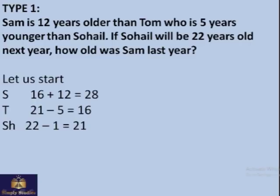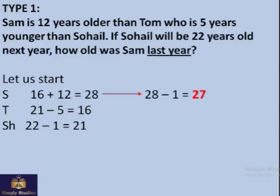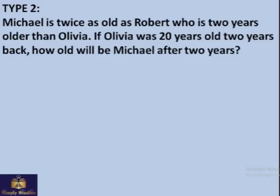Sam is 12 years older than Tom, whose age we now know is 16, so Sam's present age is 28. The question asks how old was Sam last year, so we take away 1: 28 minus 1 gives 27. That's the answer. Following these steps leads to far fewer mistakes, as it's very easy to make errors in these types of questions.